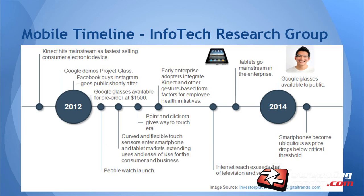Now let's look at this mobile timeline. Starting in 2012, Google demos Project Glass. Building through 2013, another innovative mobile technology is Microsoft Kinect — used in enterprise contexts. Moving up to 2014, we think Google Glass will be available to the public, and almost everyone will have a smartphone. In Africa, they skipped the landline phase entirely and went straight from nothing to mobile phones, and now smartphones are becoming ubiquitous.